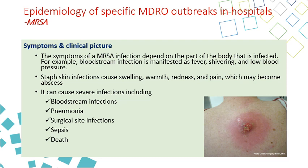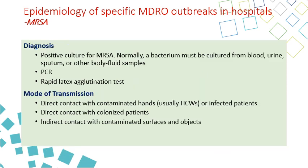If the patient has bloodstream infection, you will have fever, shivering, and hypotension. Diagnosis is by positive culture for MRSA, PCR diagnosis, and rapid latex agglutination test. Transmission is usually by direct contact with contaminated hands, especially when the healthcare worker does not perform appropriate hand hygiene, or direct contact with colonized patients who carry the organism in their nose. Indirect contact after contamination of surfaces and objects in the unit also occurs.